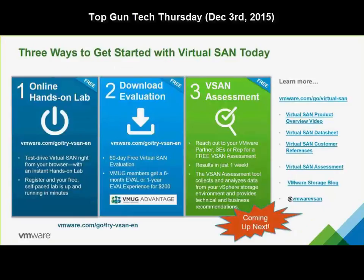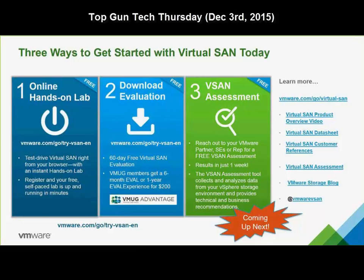Some resources: if you're not familiar with the hands-on lab, there's a link at vmware.com/go/try-vsan. It walks you through configuring vSAN step by step. You can also download a free 60-day trial. VMUG members get a six-month eval, and you can pay $200 for a one-year eval. The new vSAN assessment will be covered by Tom next.